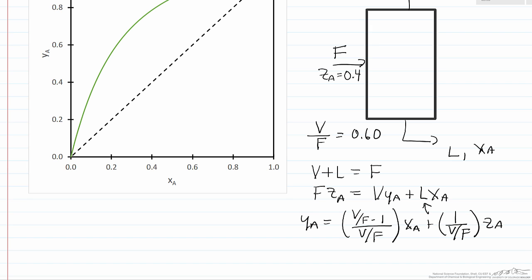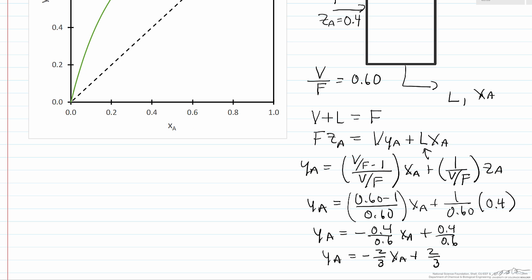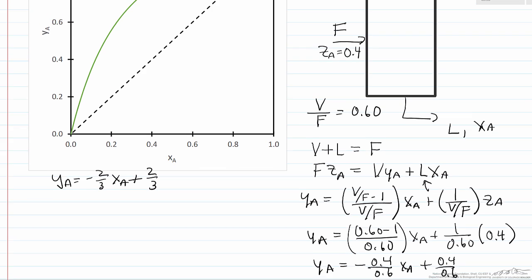This is a line that's linear. ZA is fixed. Since I know the value for ZA and I know the value for V over F, I can actually write the equation for this line. So let me write this equation again here, that YA is minus two-thirds XA plus two-thirds. So that's the line that we want to plot on our YX diagram.